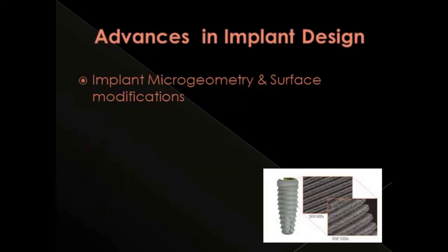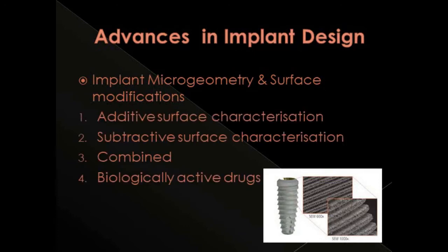The advances in implant design under micro geometry mainly deals with surface modifications or surface characterizations. There are many studies going on to modify the surface of the implant to enhance osseointegration as well as bone response. Basically there is additive surface characterization where the surface of the implant is roughened by adding materials onto the surface — by methods like ion deposition, simple precipitation, plasma spray, etc.